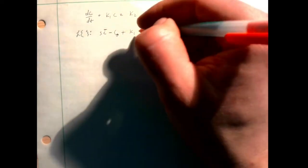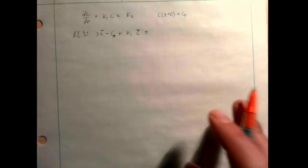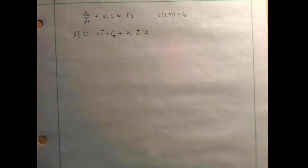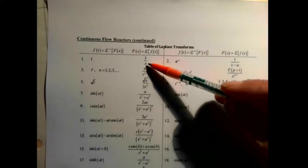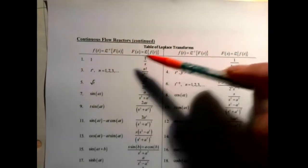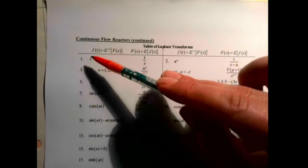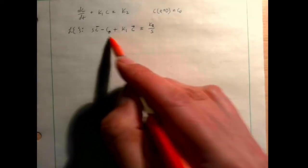So the dC/dt term becomes s·C-bar minus C0. Then plus K1, which is a constant, passes through, and the C term in the Laplace domain just becomes C-bar. For K2 — you might be tempted to leave it as K2 — but the Laplace transform of a constant, looking at the first line of the table, is that constant over s. So K2 transforms to K2/s.